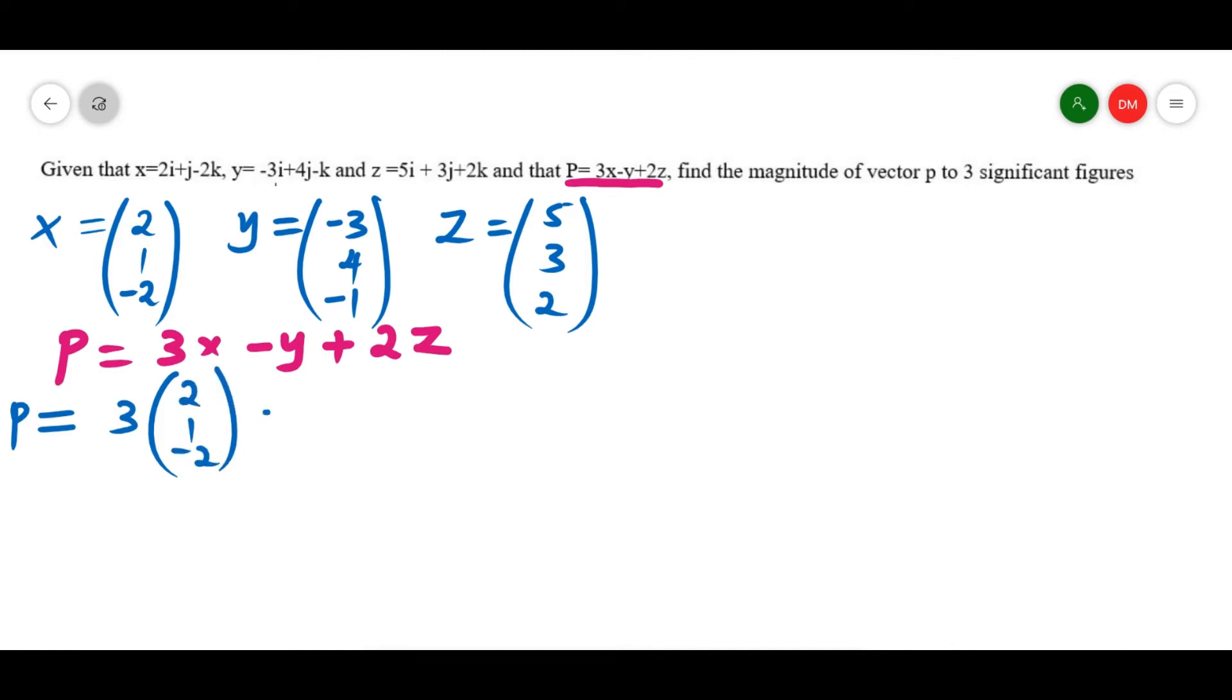Minus y, y is negative 3, 4, negative 1, plus 2z, z is 5, 3, 2, like that.